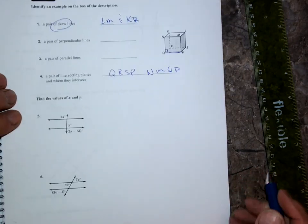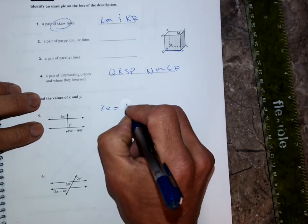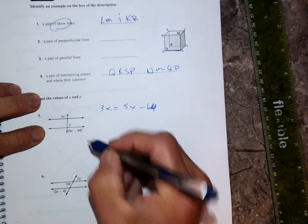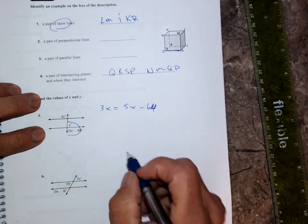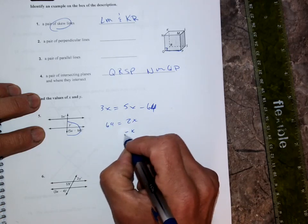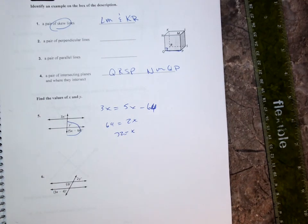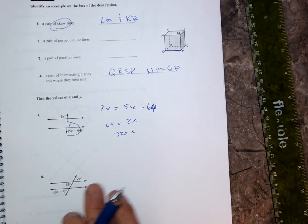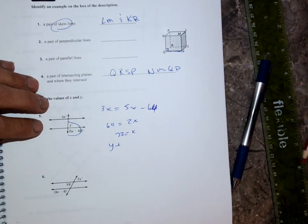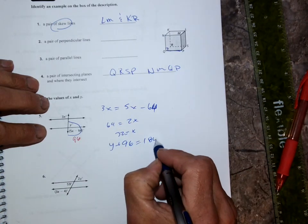Number 5: find the value of x. They've got to be equal because they're alternate angles, so take 3x and set it equal to 5x minus 64. When you get x, these two have to add up to 180 degrees. I have 2x equals 64, x equals 32. I plug 32 in: 5 times 32 minus 64, I get 96. So y plus 96 equals 180, straight line 180 degrees.